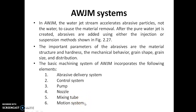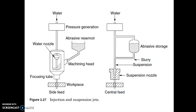We have a motion system which controls the XY position of the tool, and that depends upon the profile and the cutting which has to be made on the workpiece. Now these are the two types of delivery system: one is injection and suspension jets, also called side feed and central feed systems.